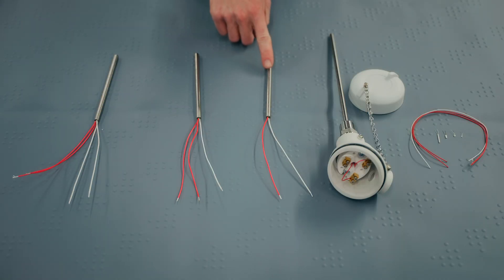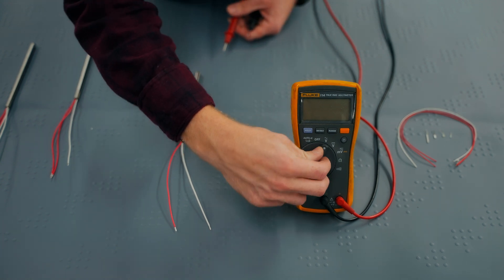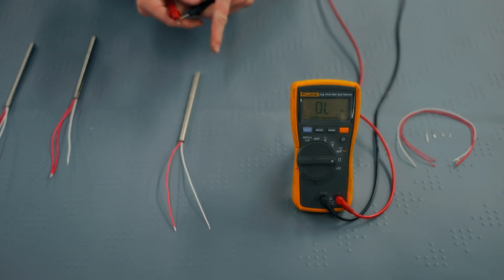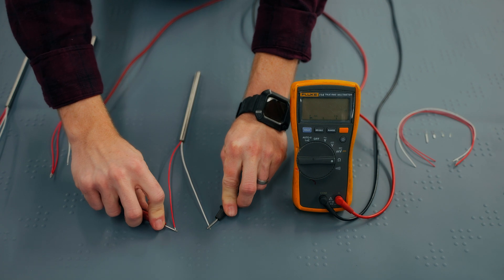RTDs can be constructed in two, three, or four wires. On a two-wire RTD, simply set the multimeter to measure the resistance and check the resistance between the two leads. This RTD reads about 109 ohms, so it's functional.